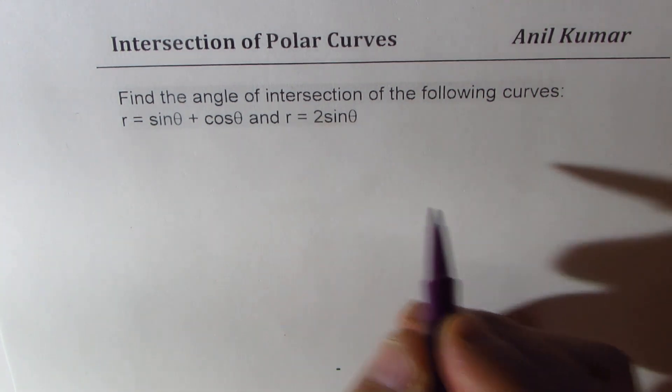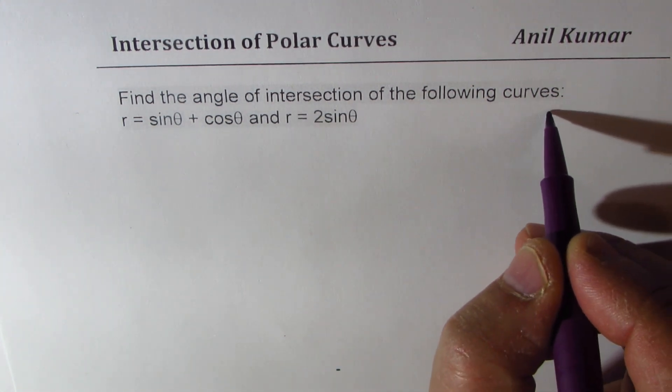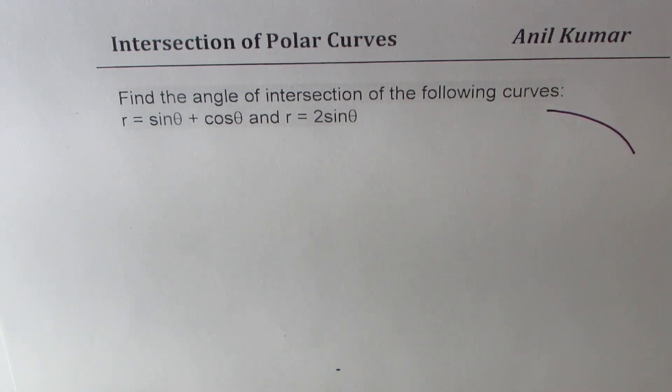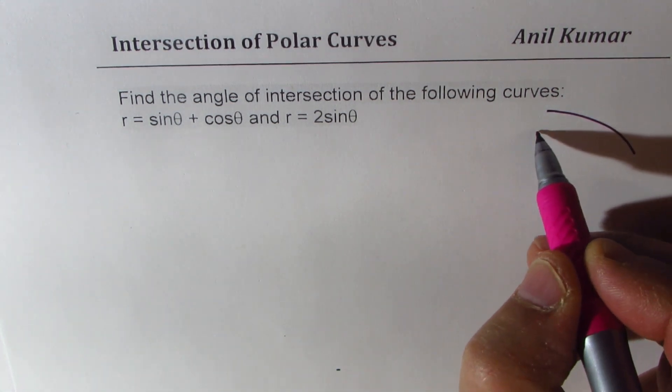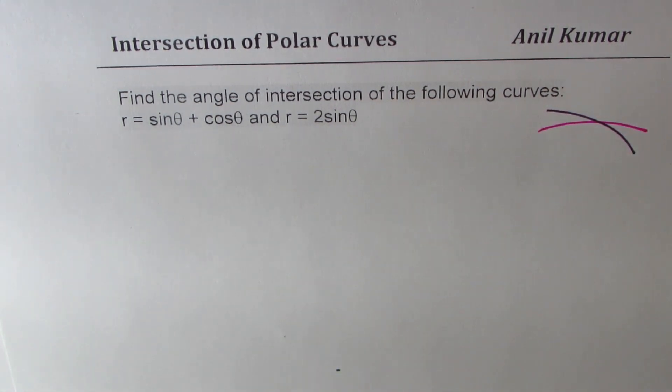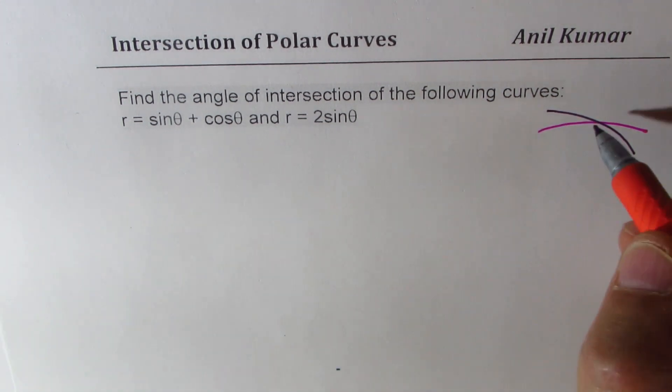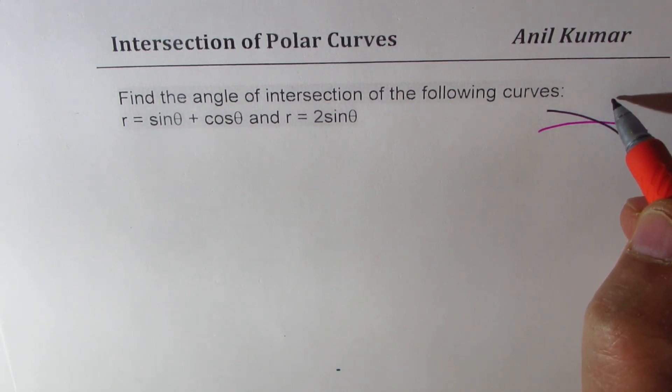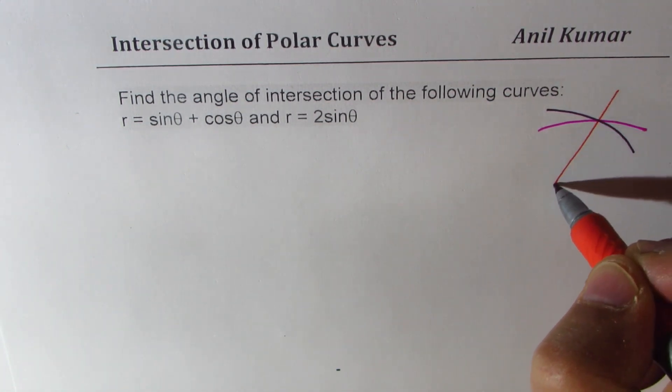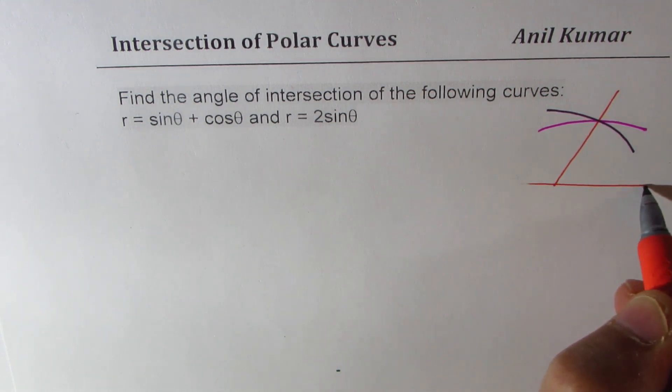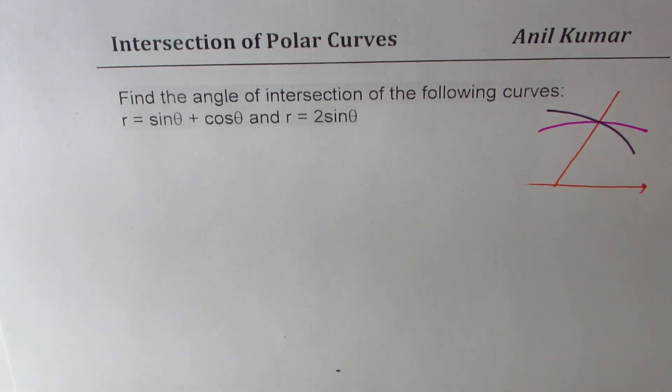So when we are considering two different curves, we need to consider the point at which they intersect and the angle they make with the tangent. So let's say these are the two curves, then what we'll try to understand is the angle which they make with the radial vector and their difference will give us the angle between the curves.